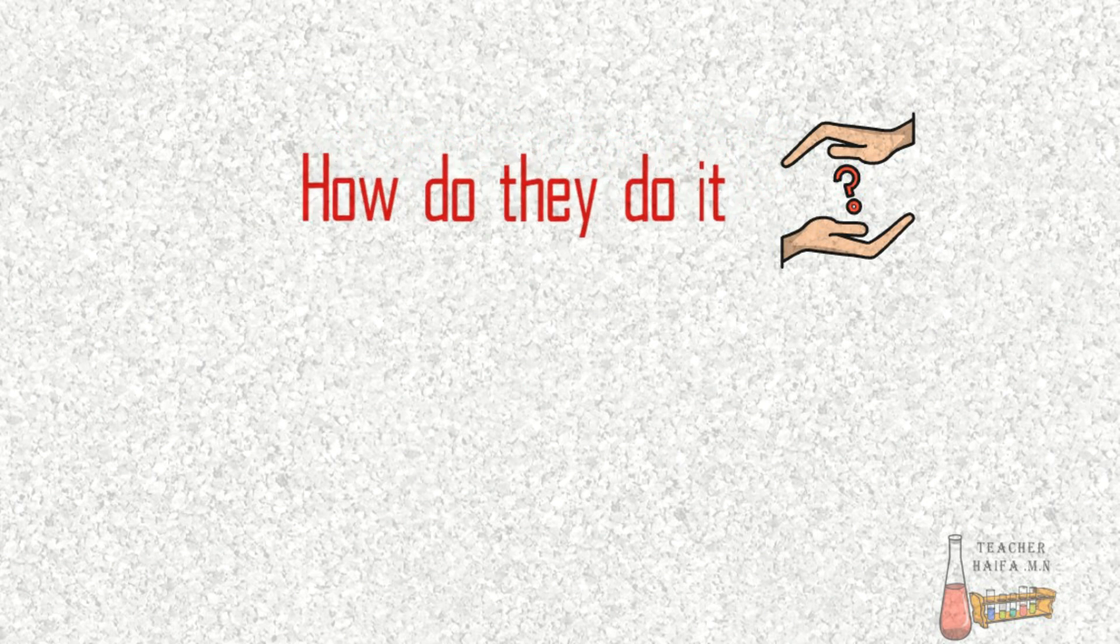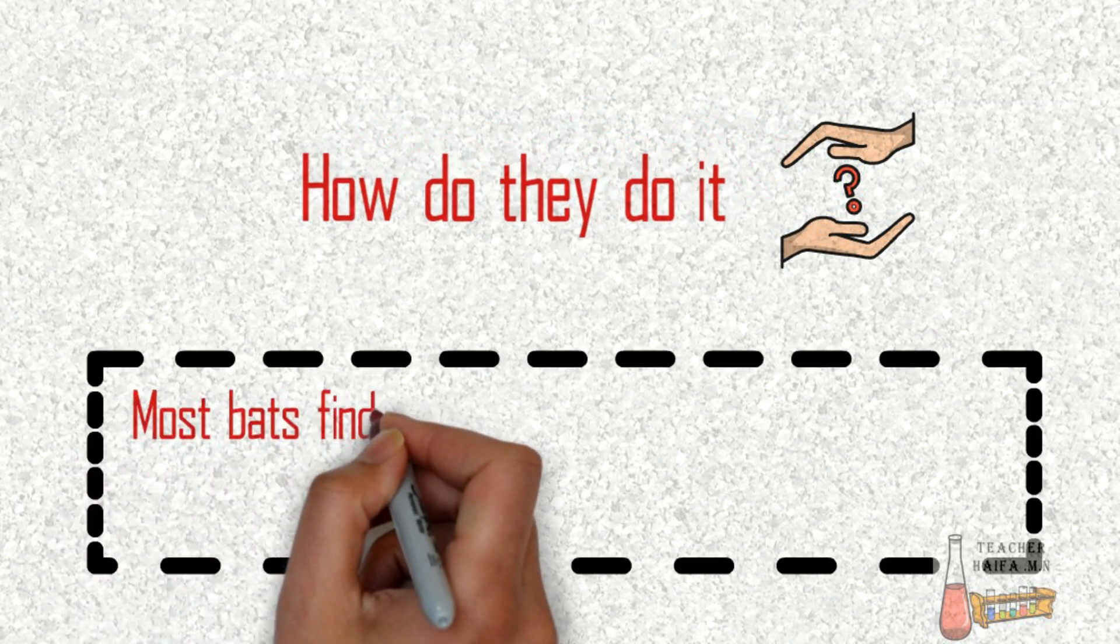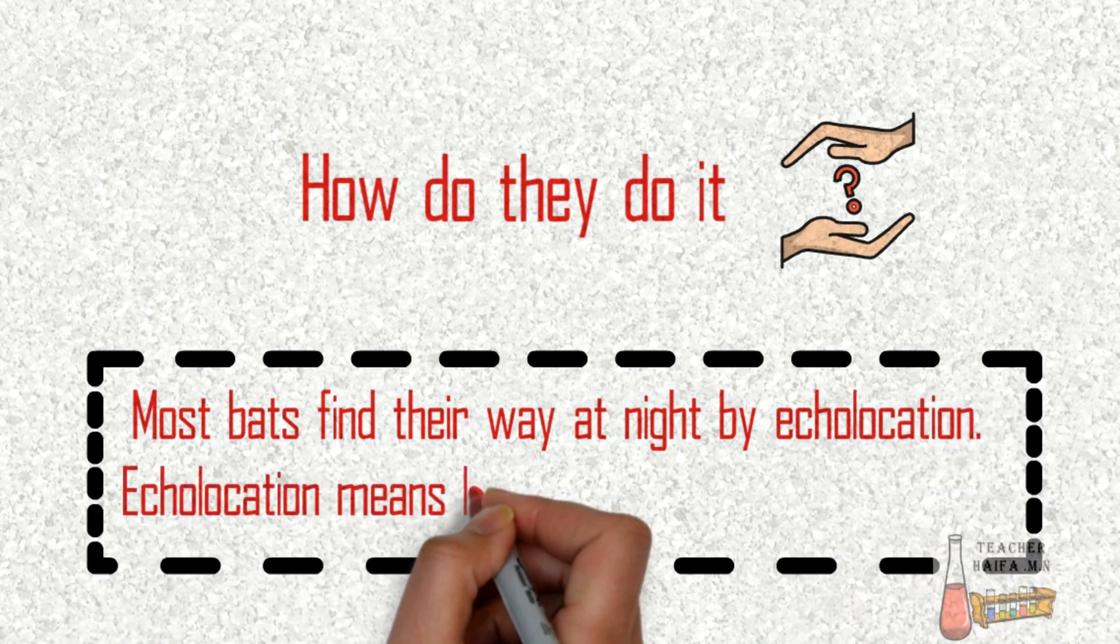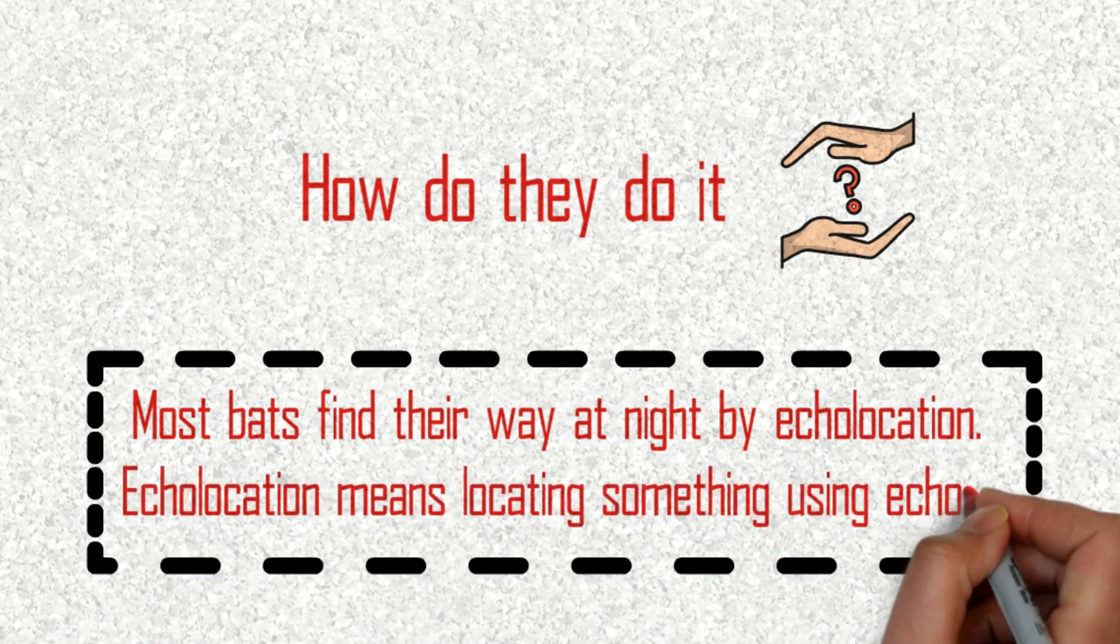How do they do it? Most bats find their way at night by echolocation. Echolocation means locating something using echoes.